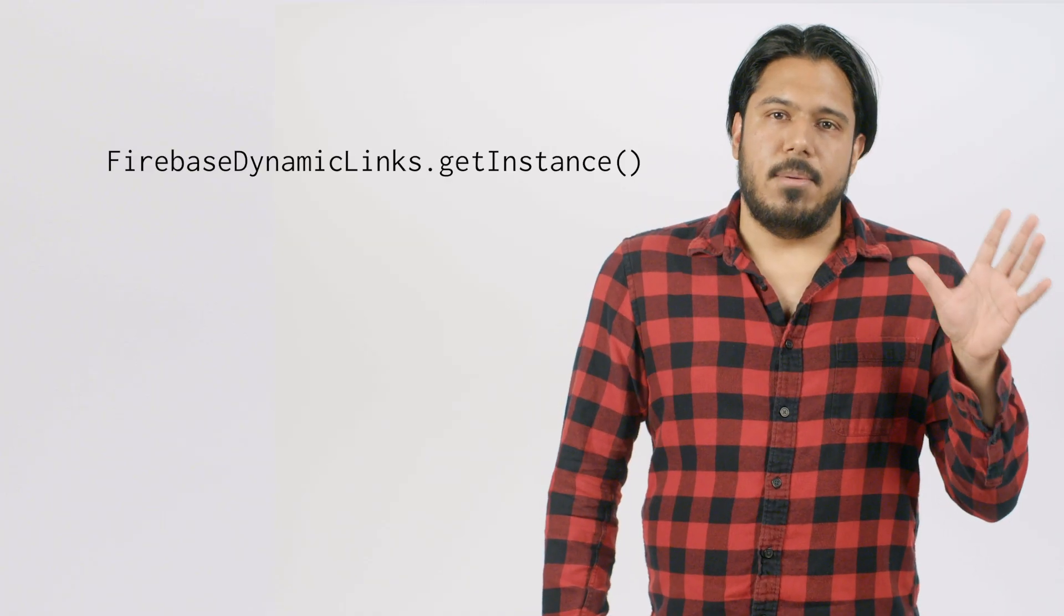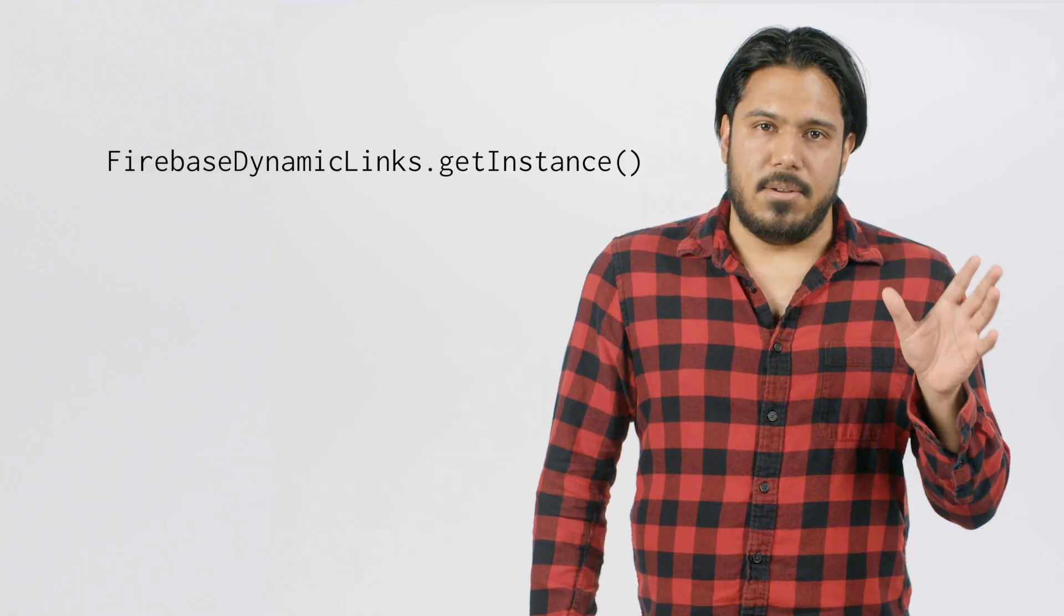The first is the FirebaseDynamicLinks.getInstance method call. So in addition to providing us with a singleton instance we can use to call into our Firebase Dynamic Links SDK methods, this call is also what enables Firebase Dynamic Links analytics tracking in Google Analytics for Firebase. So if you have analytics configured for your Firebase project, this getInstance call ensures that the events associated with interacting with the Firebase Dynamic Link are reported.